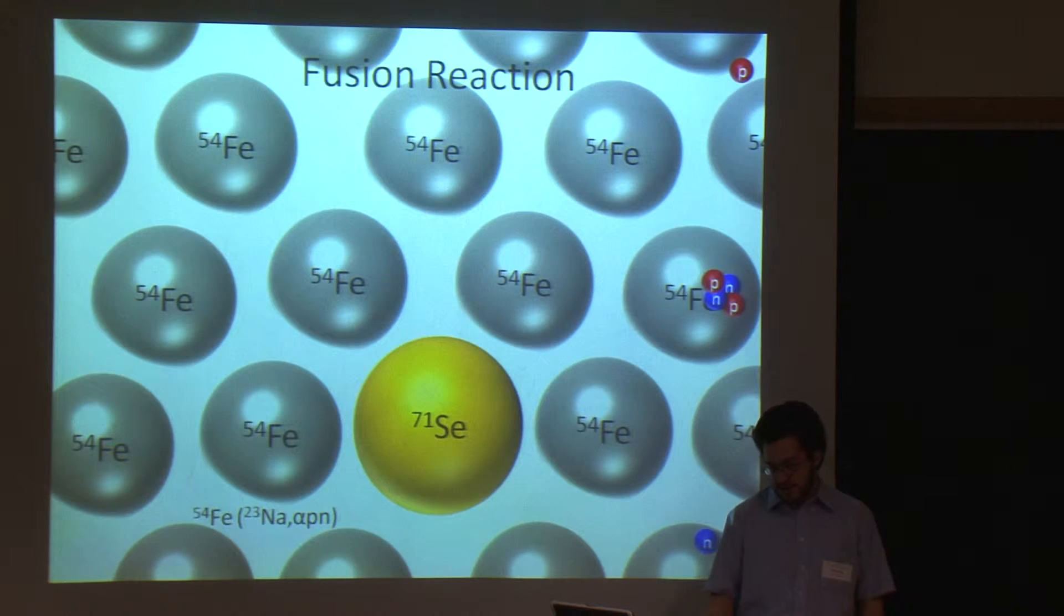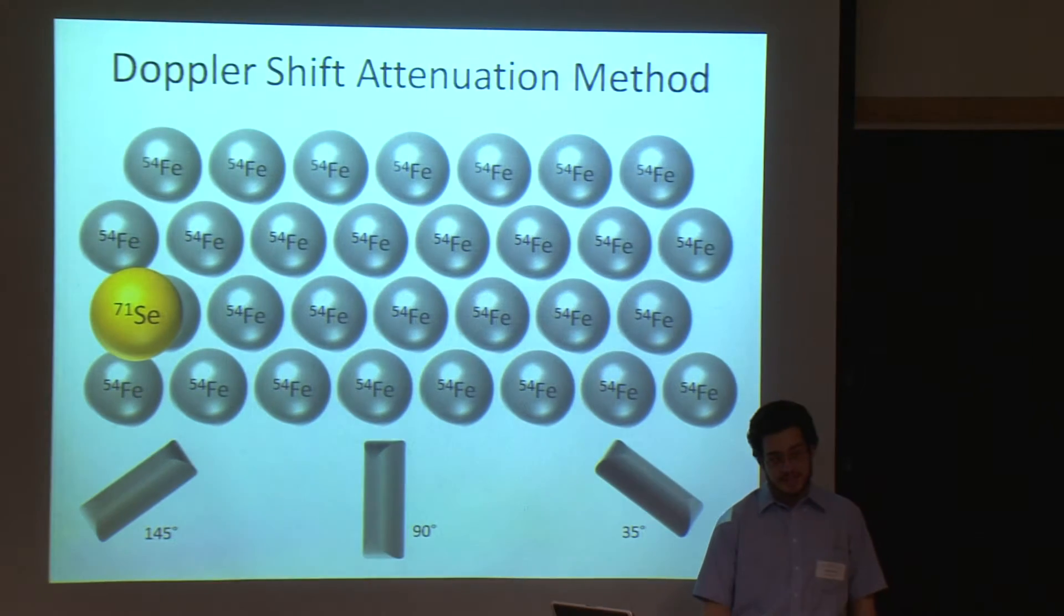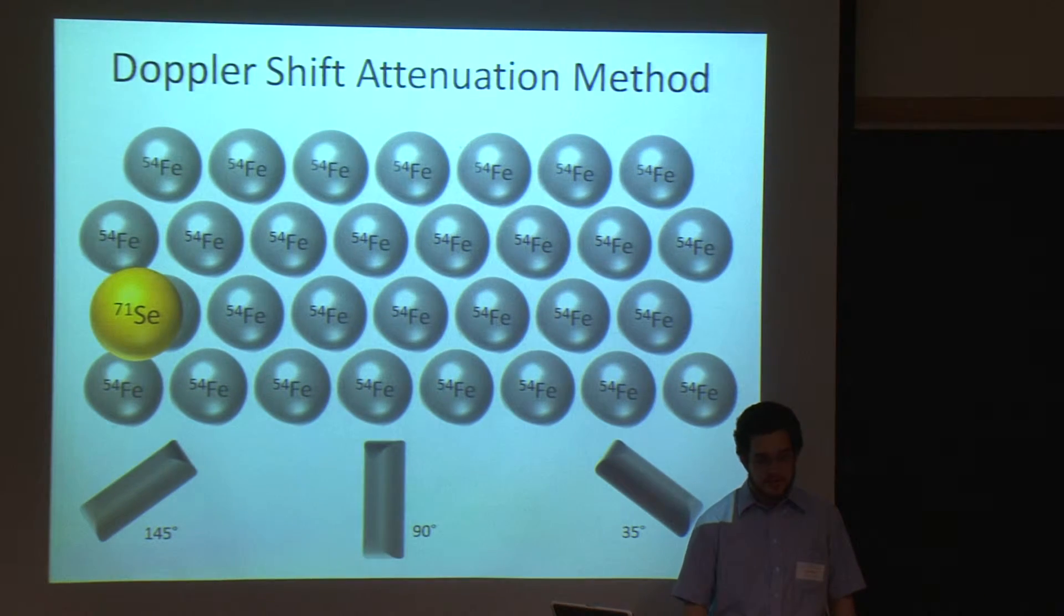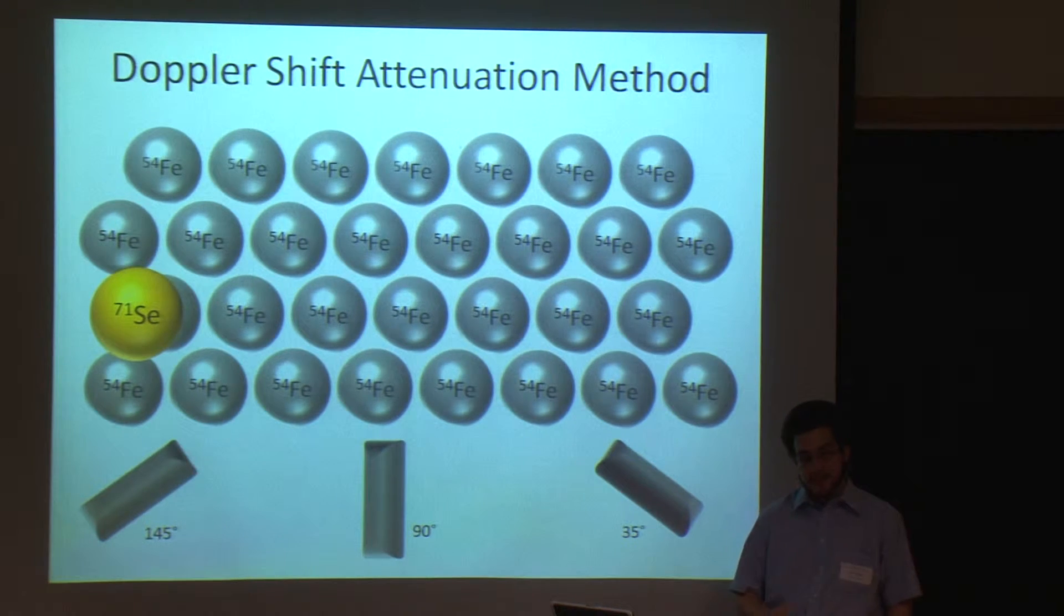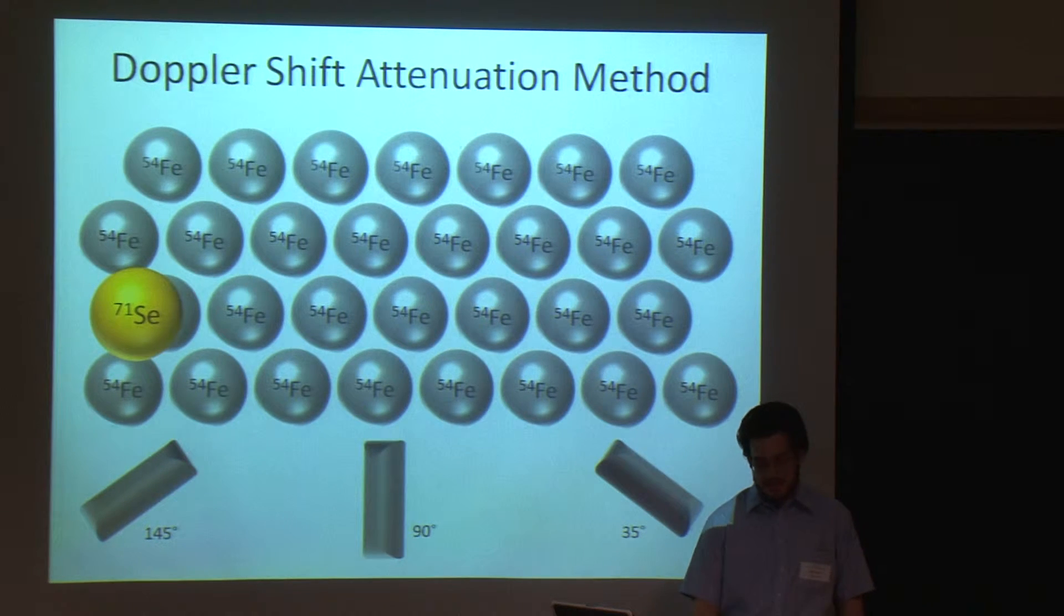Now, to measure the lifetimes of the energy states, we need to know how long it takes between when the nucleus is formed and when the gamma rays are emitted. And the nucleus starts out moving very quickly, a couple percent of the speed of light, in fact, and it slows down in a predictable way inside the ion target. So, knowing this, we can determine the time by measuring the speed of the nucleus from the Doppler shift of the gamma rays. This is similar to the Doppler shift for sound waves or the red shift in cosmology.